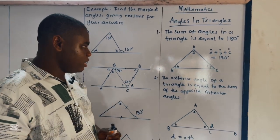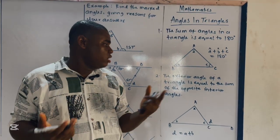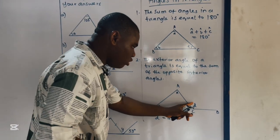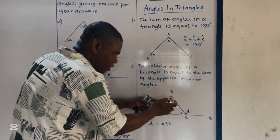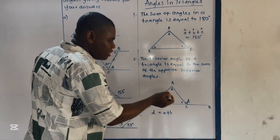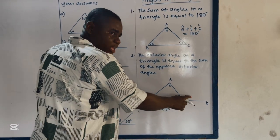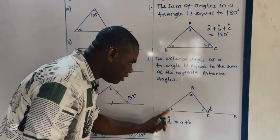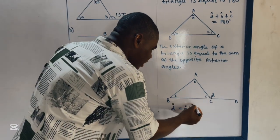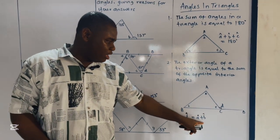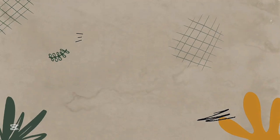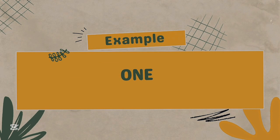Another rule you should understand is that the exterior angle of the triangle is equal to the sum of the opposite interior angles. It therefore means that the exterior angle — angle D — is equal to the sum of the interior opposite angles A and B. So the exterior angle D is equal to A plus B, which are the two interior opposite angles. Now let's move to our examples for more understanding.